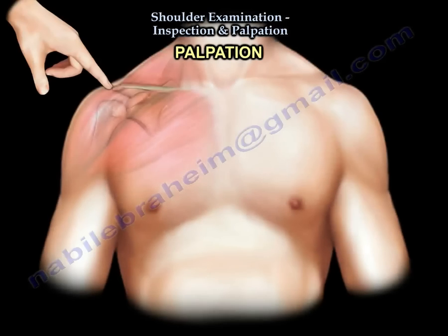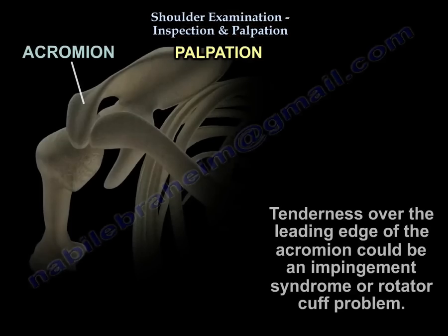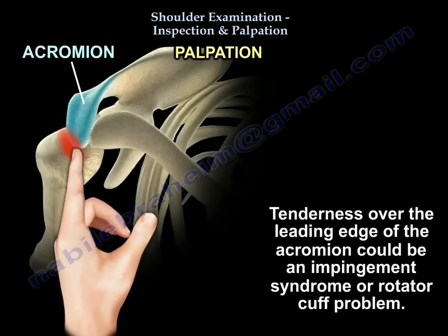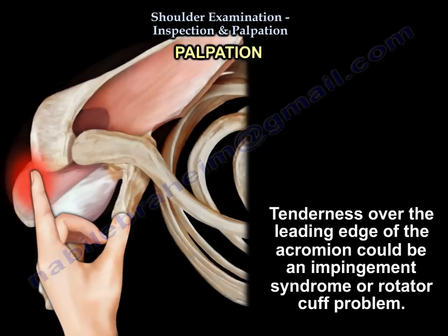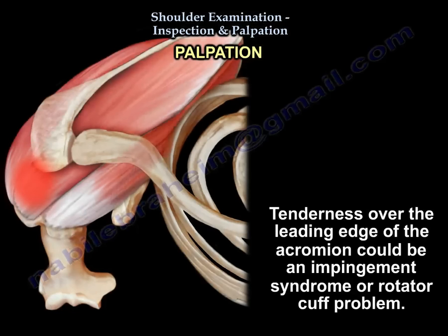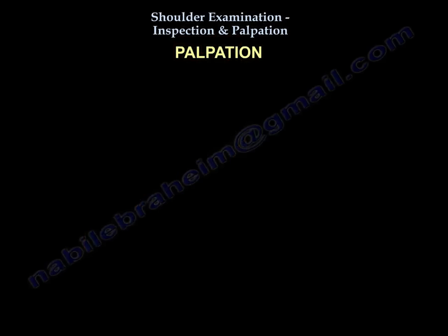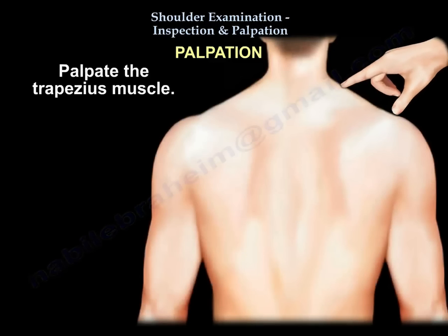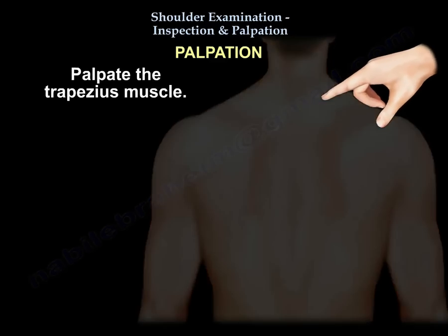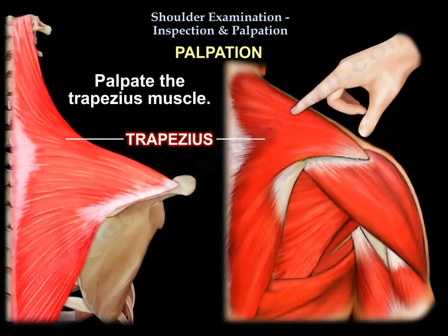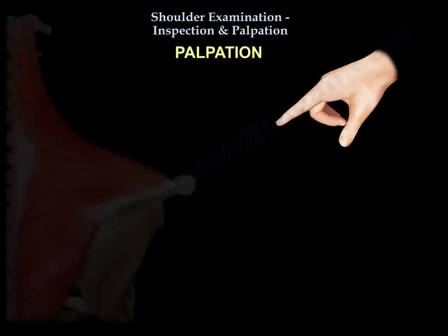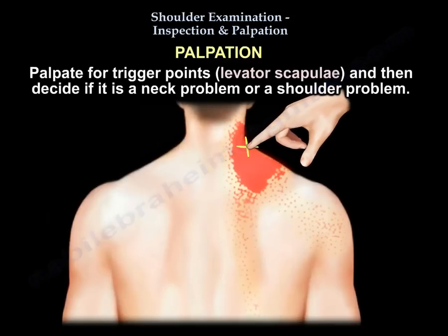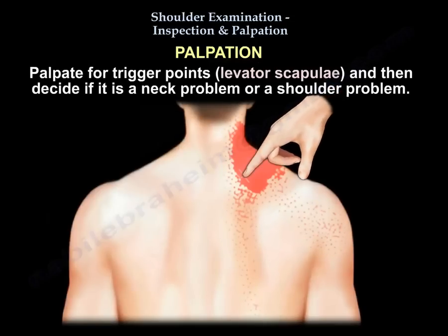Tenderness over the leading edge of the acromion can indicate impingement syndrome or a cuff problem. Palpate the deltoid, palpate the trapezius, and palpate for trigger points which come from the levator scapulae muscle — physiotherapy makes a big deal about these. Then make the decision: is it a neck problem or a shoulder problem?